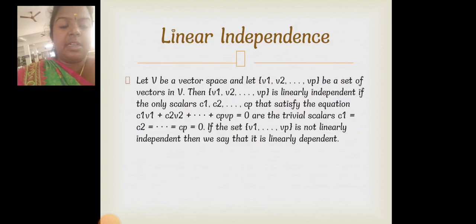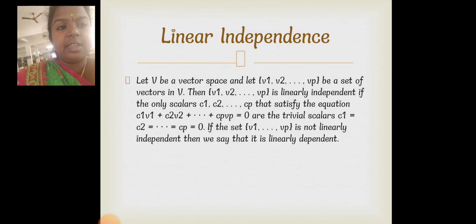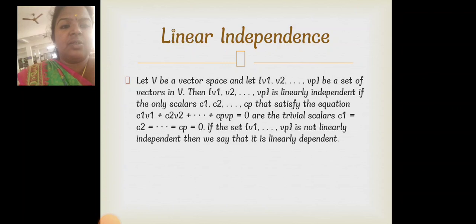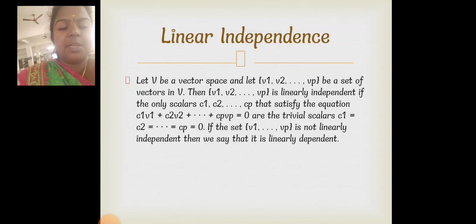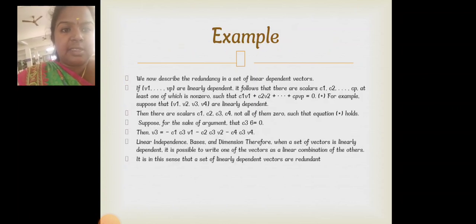Linear independence is also defined. Consider a set of vectors V1, V2, ..., Vp. This set is linearly independent if the only scalars C1, C2, ..., Cp satisfying C1·V1 + C2·V2 + ... + Cp·Vp = 0 are all zero. Examples for linearly independent and dependent vectors are also provided.